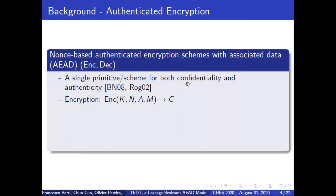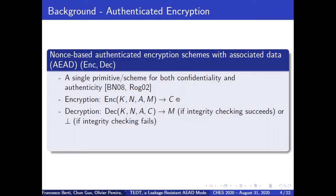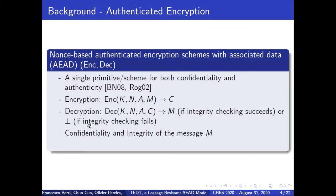It has an encryption process that maps a key k, a nonce n, blocks of associated data a, and a message m to a ciphertext c. Correspondingly, it has a decryption process that takes a key k, a nonce n, associated data a, and a ciphertext c as inputs. If the inputs pass the integrity checking, then the decryption outputs the corresponding plaintext m. Otherwise, it outputs bot to indicate a failure. An AEAD shall ensure both confidentiality and integrity of the message m and integrity of the associated data a.